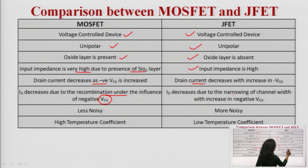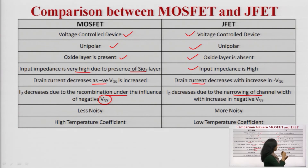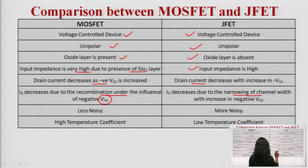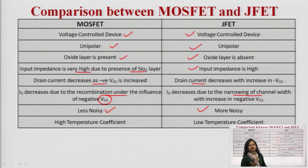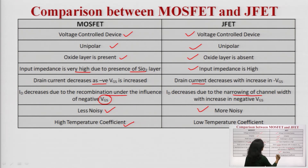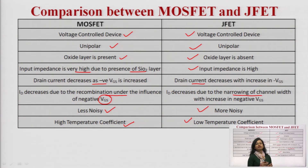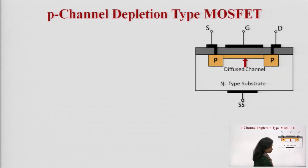In JFET, drain current decreases due to the narrowing of channel width. When VGS is increased in the negative direction, at a certain point the channel width narrows down, the channel closes, pinch-off occurs and no further current flows. MOSFET is less noisy while JFET is more noisy, so in terms of noise contribution MOSFET is preferred. Temperature coefficient is high in the case of MOSFET while in JFET temperature coefficient is low.